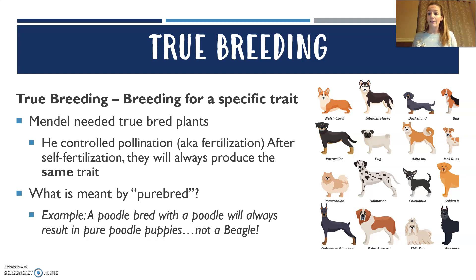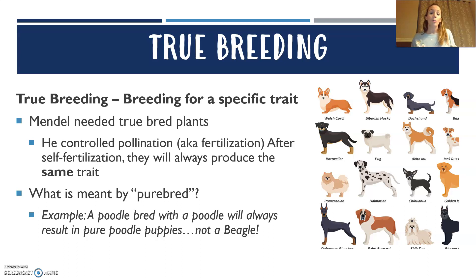A lot of you, if you have a purebred dog at home — if you breed a purebred with a purebred, you always get the same. So poodle crossed with poodle, you always get poodle puppies. You're not going to randomly get a beagle puppy.